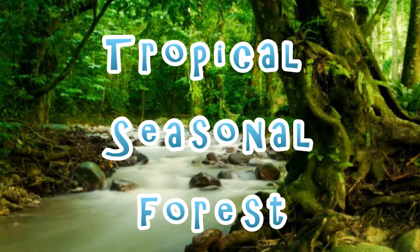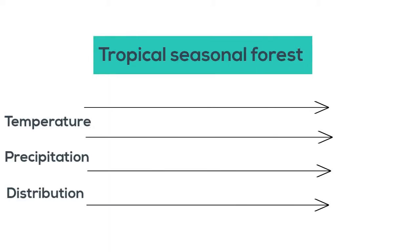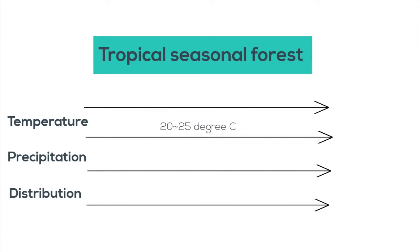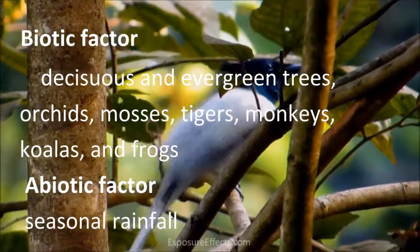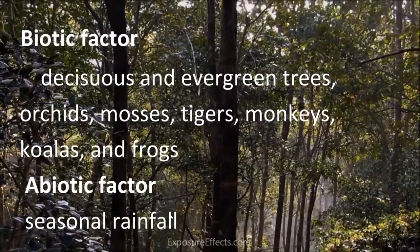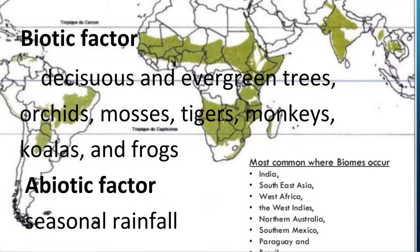Tropical seasonal forests, also known as tropical dry forests, resemble the temperate deciduous forest in one way because during the dry season, almost all of the trees drop their leaves to conserve water. Its temperature ranges from 20 to 25 degrees Celsius. Its biotic factor includes deciduous and evergreen trees, orchids, mosses, tigers, monkeys, koalas, and frogs. Its abiotic factor includes seasonal rainfall.